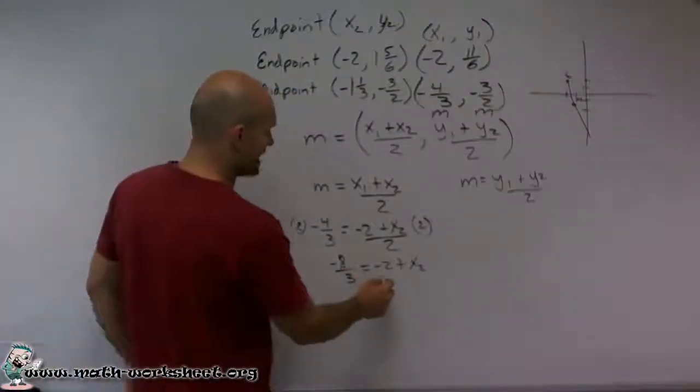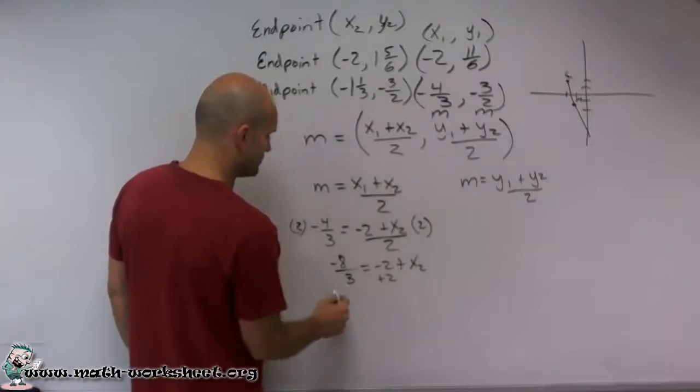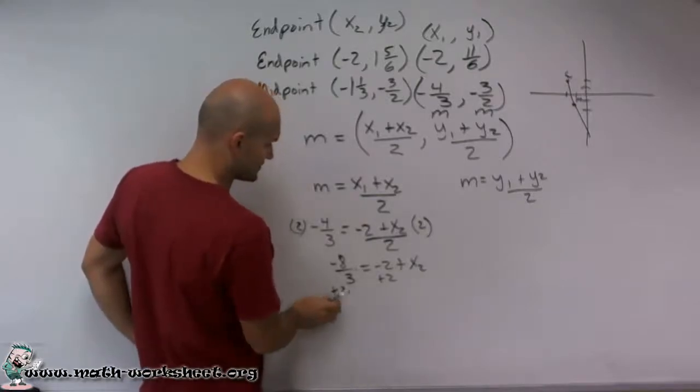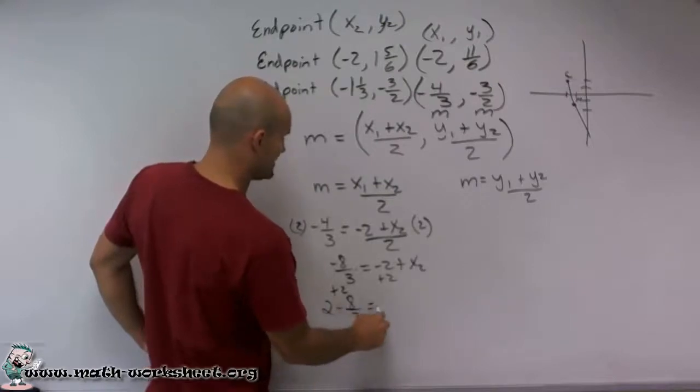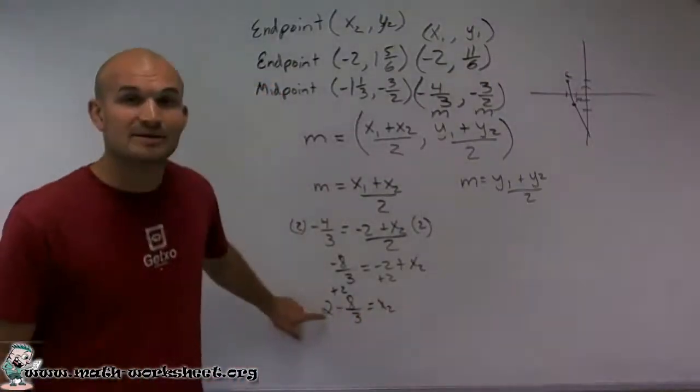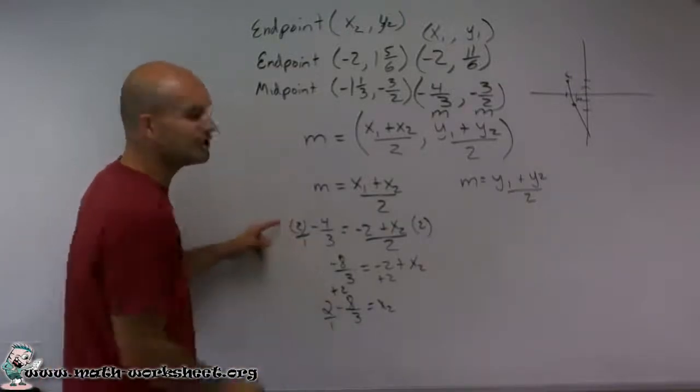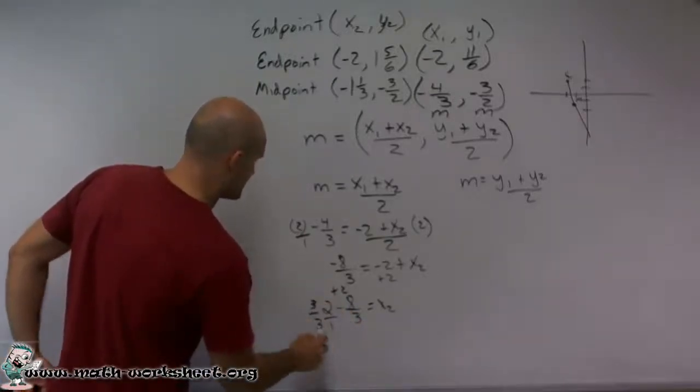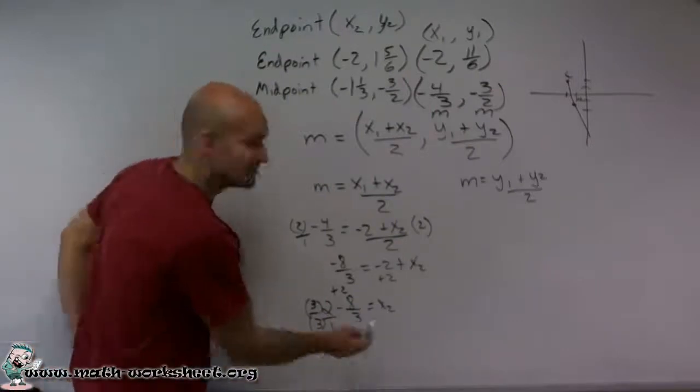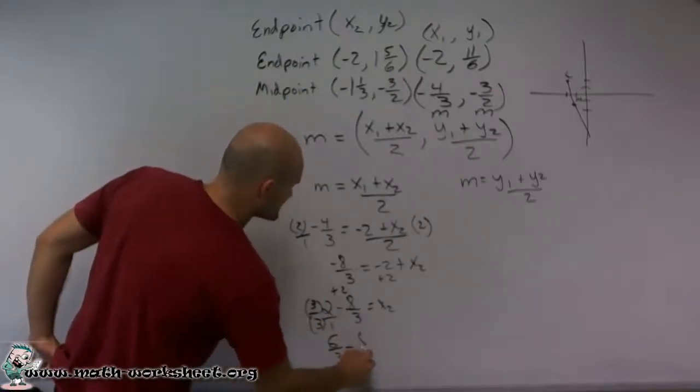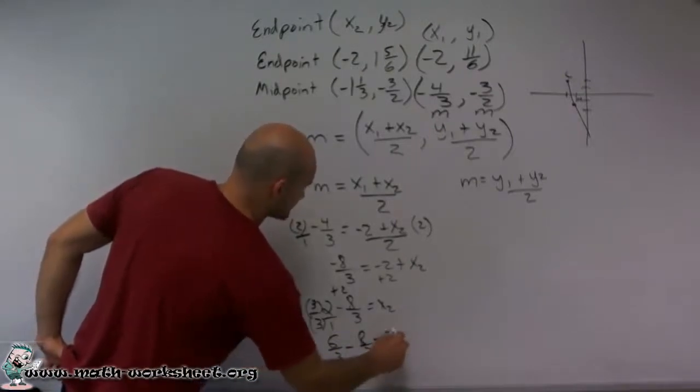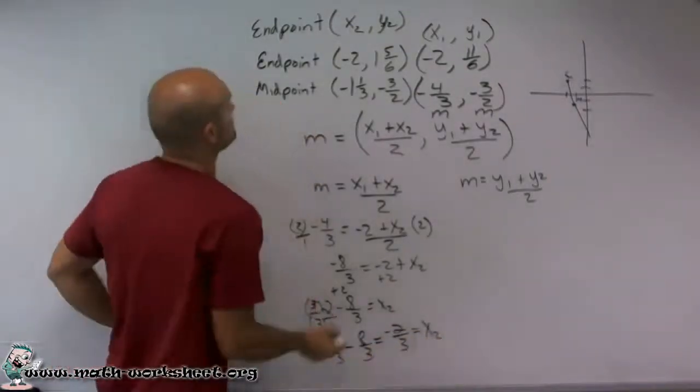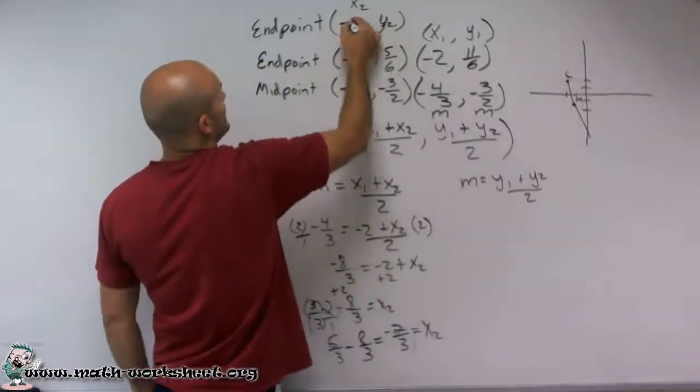Now the next thing I need to do is get rid of this negative 2. So I'm going to add a 2 to both sides. So what I have is 2 plus a negative. So it's really 2 minus 8/3 equals x2. Well, I need to get these to be the same denominator. So really, when I multiply this, you can really put the 2 over the 1. But to get these to be the same denominator, I need to multiply by 3/3. So in doing that, I get 6/3 minus 8/3, which equals a negative 2/3, which is the value of x2. So I'm going to say x2 is now a negative 2/3.